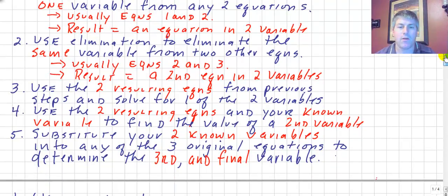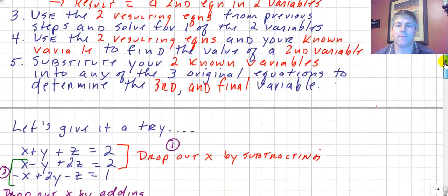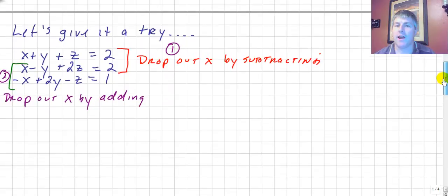Finally, we'll substitute our two known variables into any one of the three original equations that will determine the third and final variable, and we'll have an ordered triple. Let's give this a try.